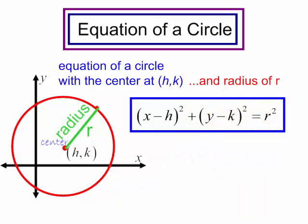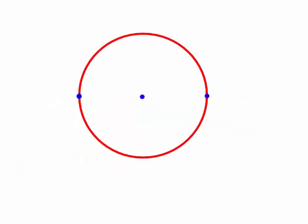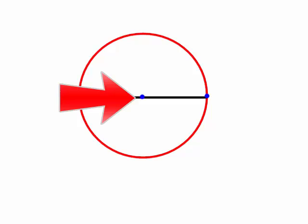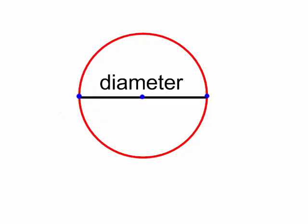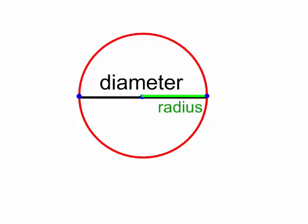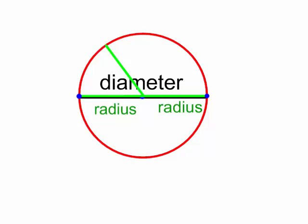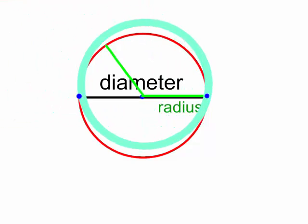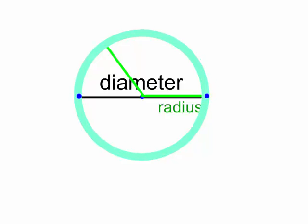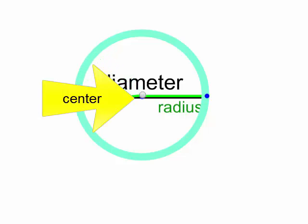Let's begin by reviewing some terminology. A line segment connecting two points on a circle and going through the center of that circle is the diameter of the circle. The radius of the circle starts from the center and goes to a point on the circle. A circle has lots of radii — in fact, the diameter is two times the radius. A circle is the set of all points at a given distance (the radius) from a given point (the center).